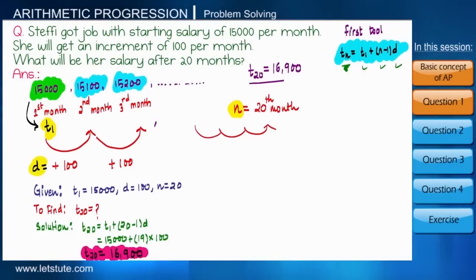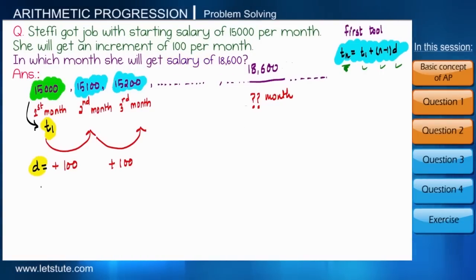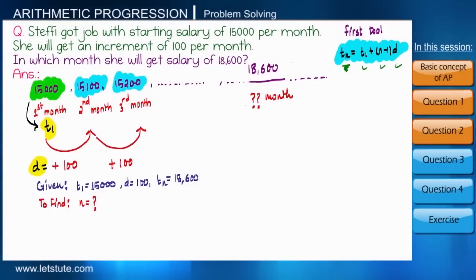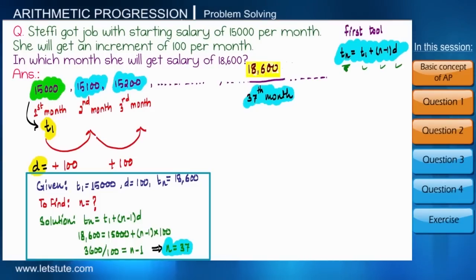Now let me twist the question a little bit. In which month will her salary be eighteen thousand six hundred? Here t1 and d remain the same, but this time the value of the term is given — tn equals eighteen thousand six hundred — and the position n is what we need to find. By substituting values we get n equals 37, meaning she will receive eighteen thousand six hundred in the thirty-seventh month.